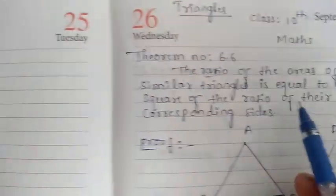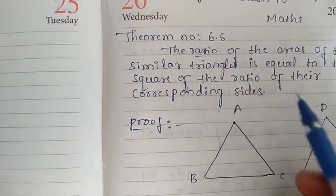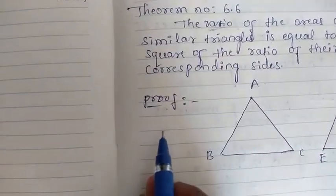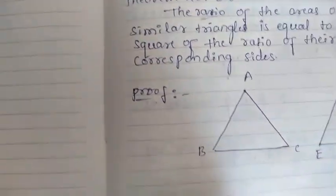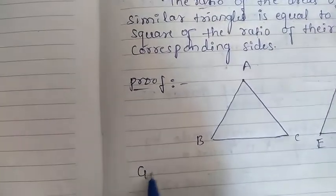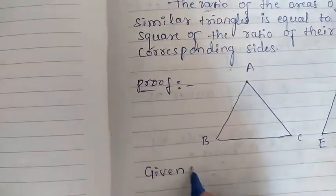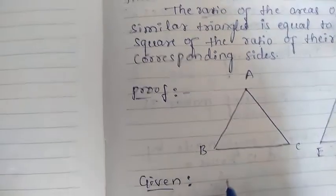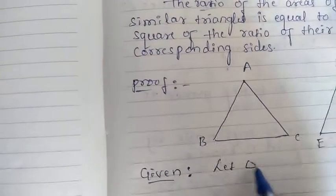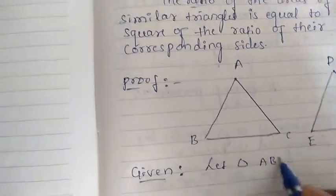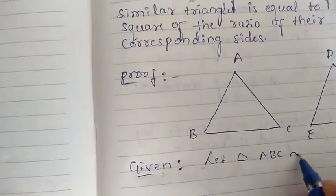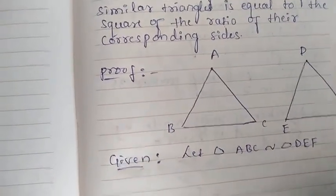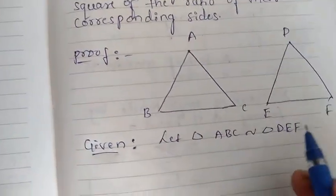So remember that statement, children — the statement is very important. See how to prove here. First you have to write the given, what is given in the statement. So let triangle ABC be similar to triangle DEF. Both triangles are given here as similar.